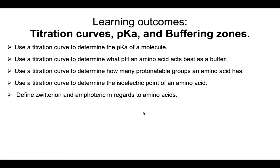In this video, we're going to talk about titration curves, pKa, and buffering zones. By the end of this, I want you to be able to use a titration curve to determine the pKa of a molecule, to determine at what pH an amino acid acts best as a buffer, to determine how many protonatable or ionizable groups an amino acid has, to determine the isoelectric point of an amino acid, and finally, to define the terms zwitterion and amphoteric in regards to amino acids.